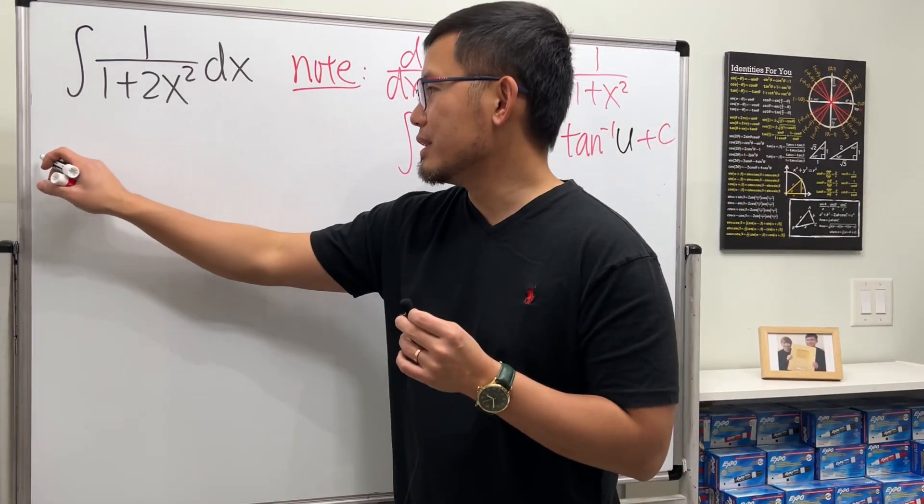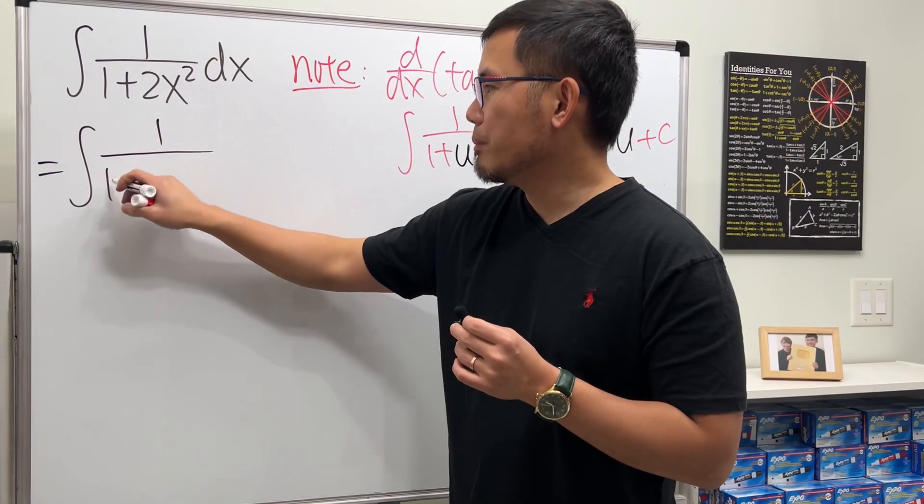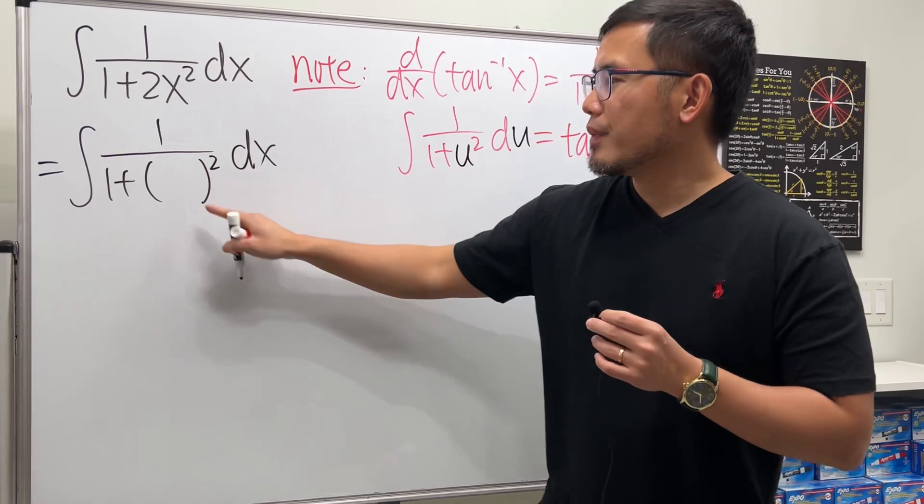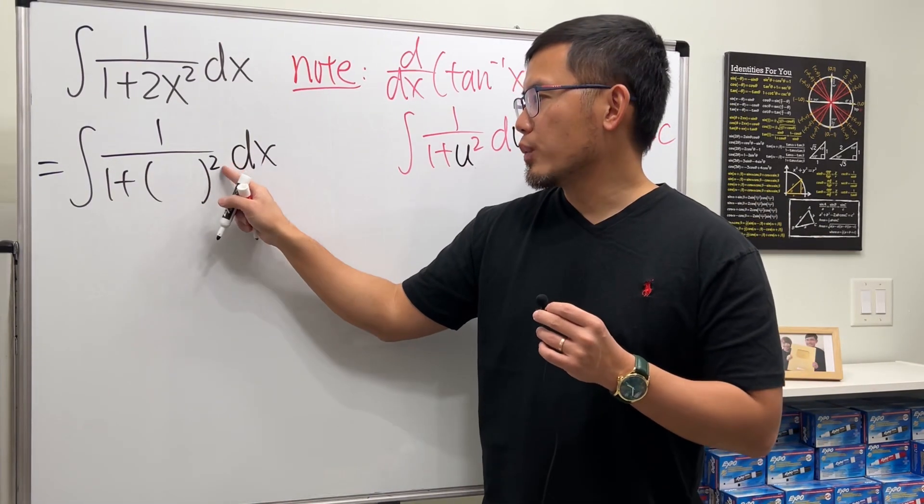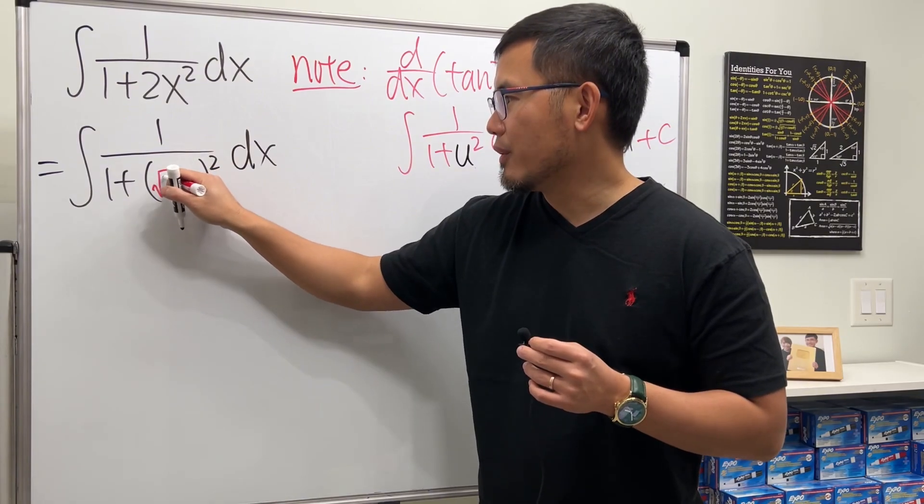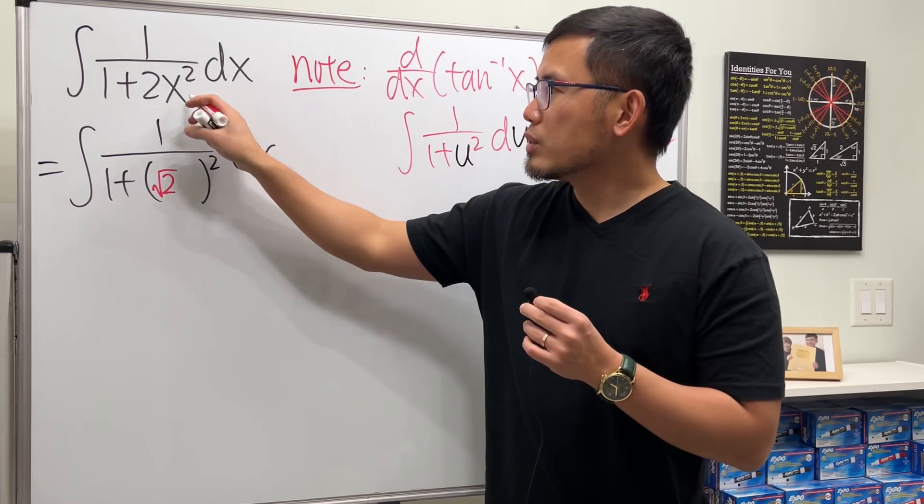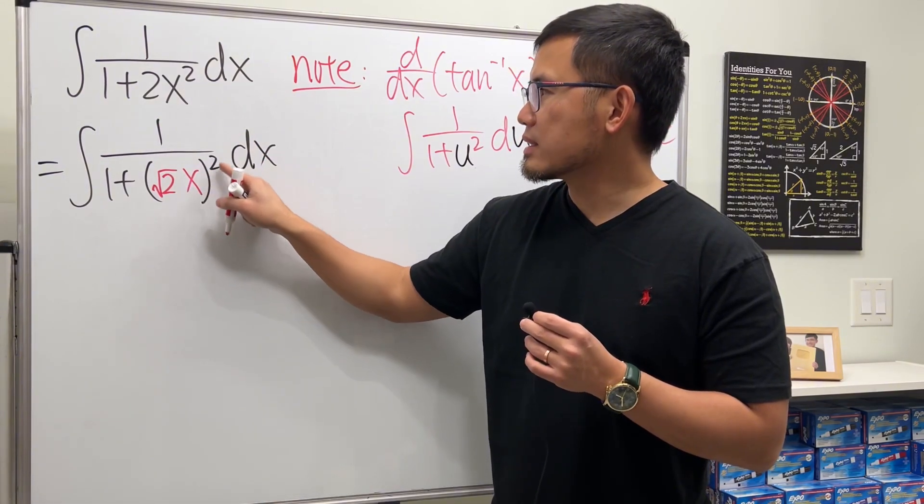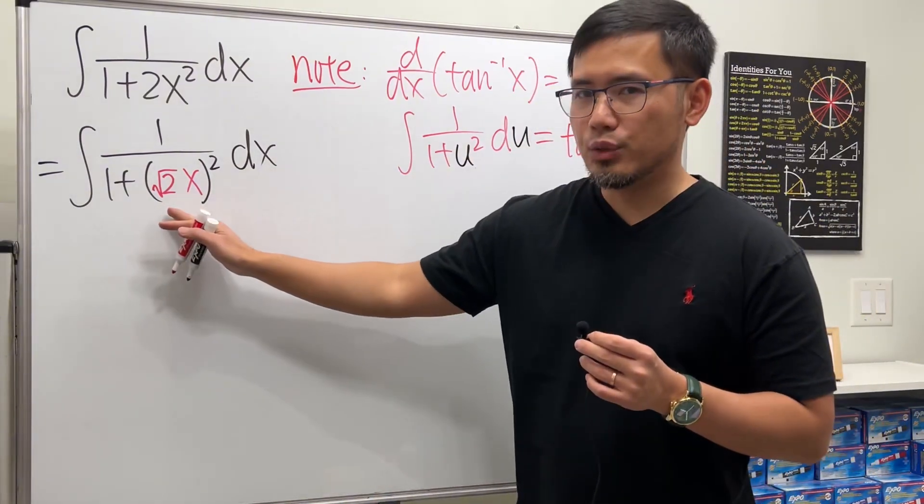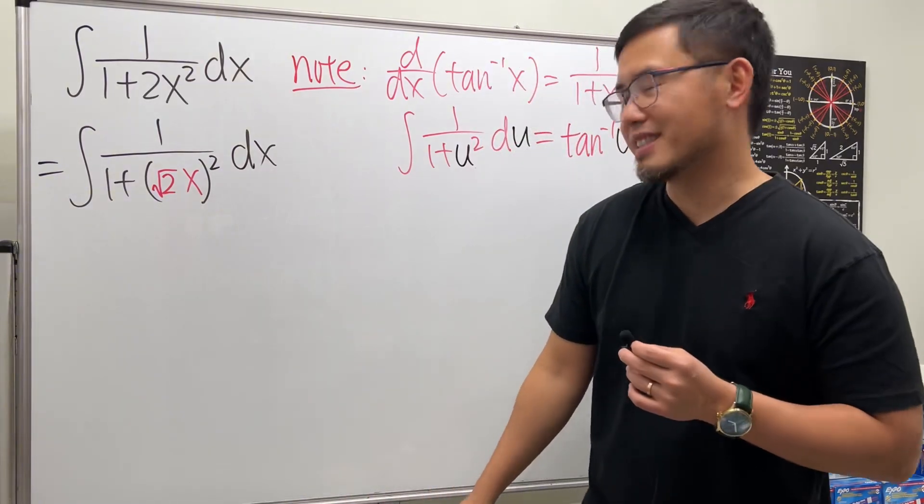The way to do it is we have 1 over 1 plus, open the parenthesis, and ask yourself: what can I put inside when I square to get 2? The answer is square root of 2. Square root of 2 squared is 2. Then we also need the x inside so we get x squared. From here you can see we can take a u-sub: let u equal square root of 2 times x.